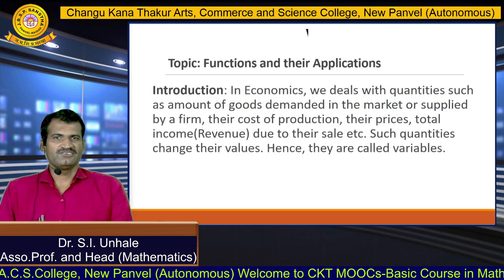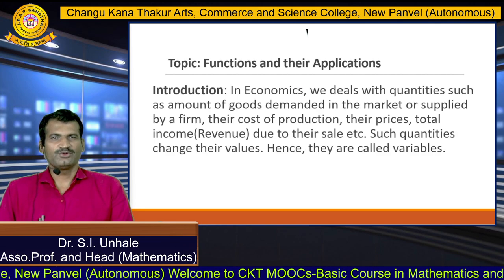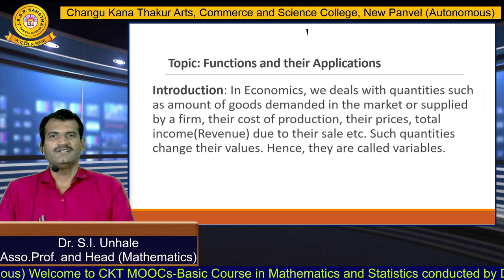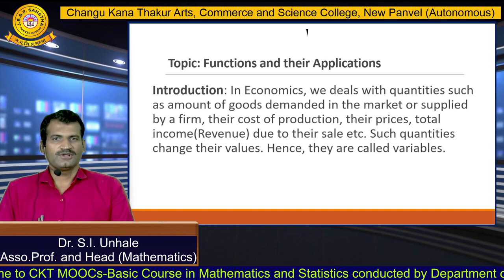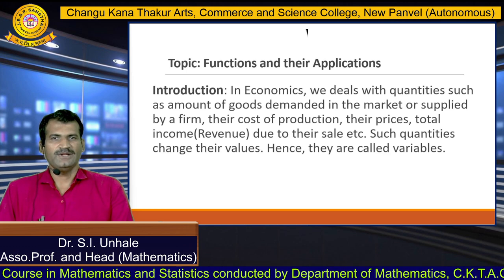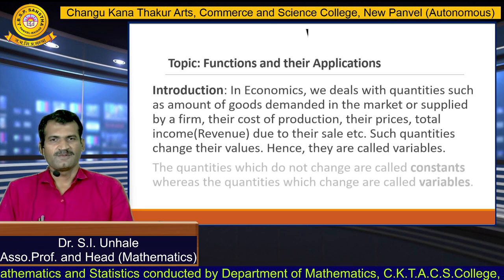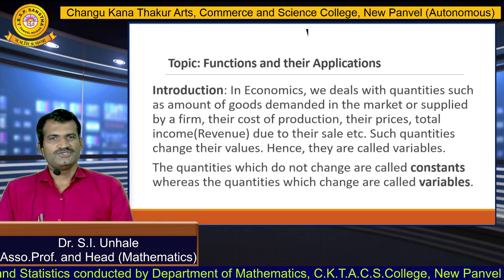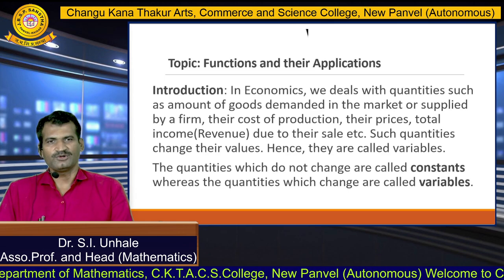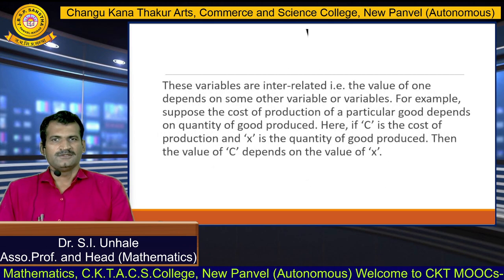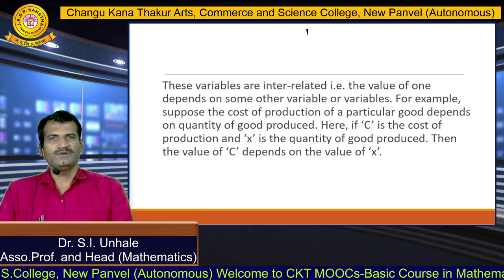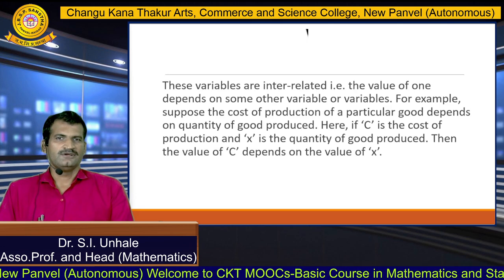First, we will see the functions and their types. As an introduction, in economics we deal with quantities such as amount of goods demanded in the market or supplied by a firm, their cost of production, their prices, total income, revenue due to their sales, etc. Such quantities change their values, hence they are called variables. The quantity which does not change its value is called a constant, whereas the quantity which changes its value is called a variable. These variables are interrelated, or we say correlated — that is, the value of one variable depends on some other variable or variables.